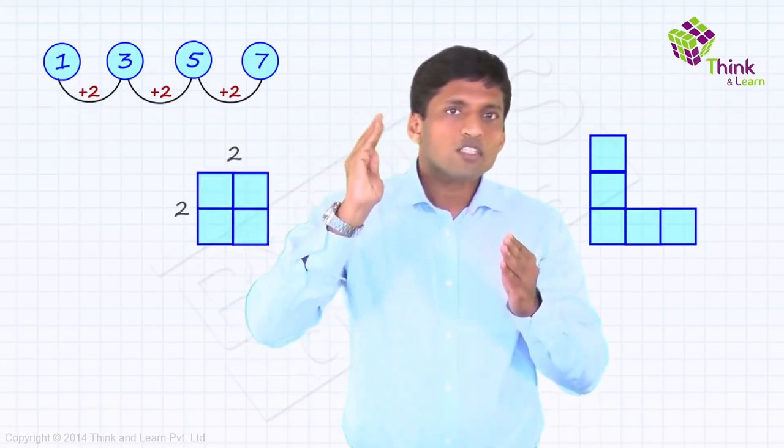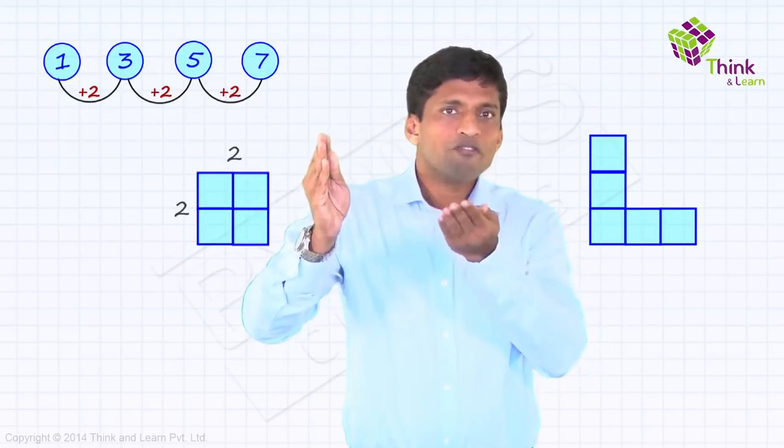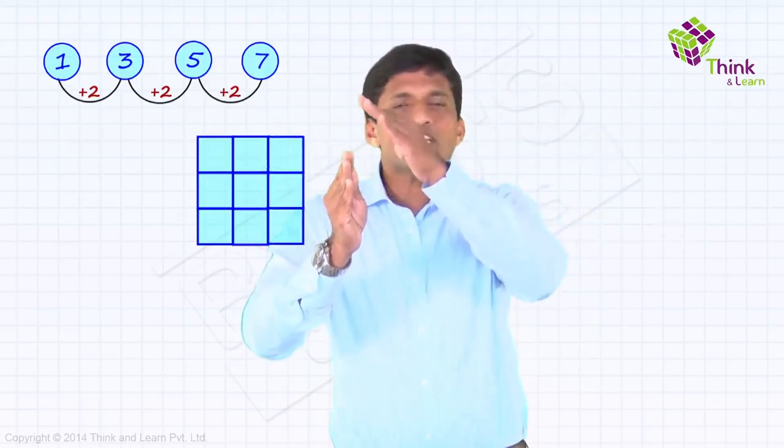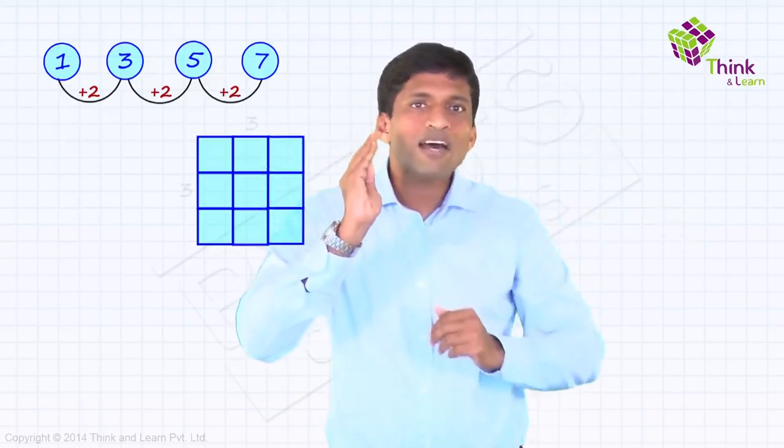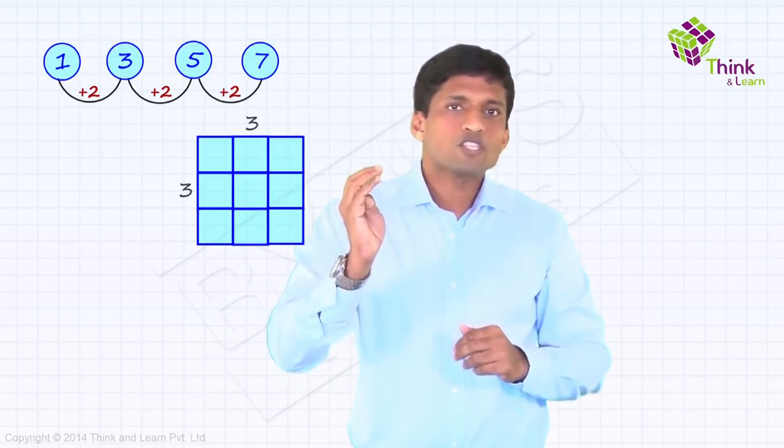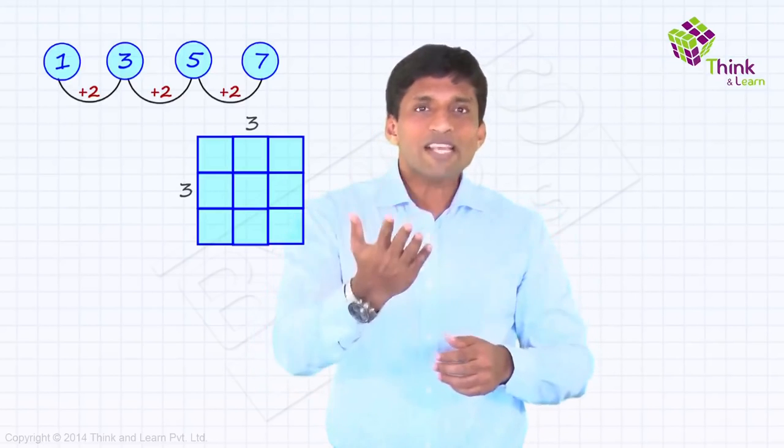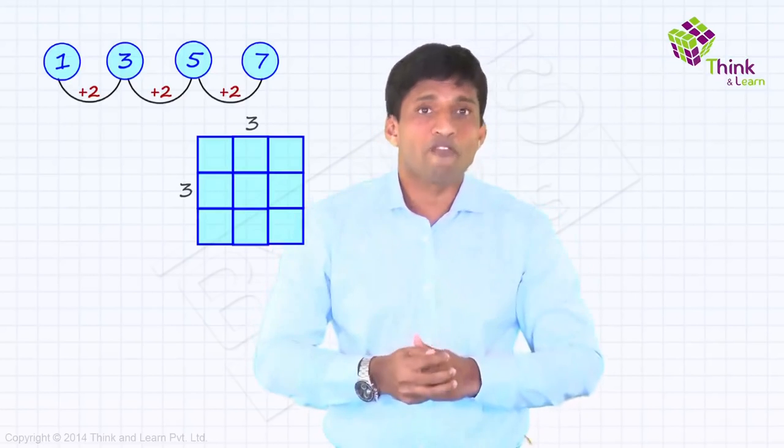Now, to the 2 by 2 square, if this 5 here, if I just rotate by 90 degrees and keep it on top, that will become a 3 by 3 square as you can see now. So, that's 1 plus 3 plus 5 equal to 9. Almost like the bricks game, Tetris game which you must have played before.